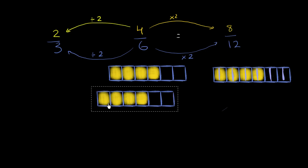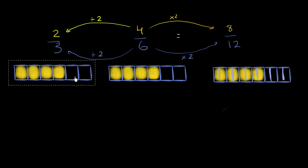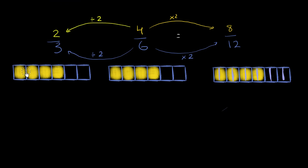Well, let's visualize that. Here we have six equal sections, but now we're going to have only three equal sections. So we can merge some of these equal sections — we can merge these two right over here, and these two right over here, and then these two right over here. So our whole is still the same whole, but now we only have three equal sections, and two of them are actually shaded in.